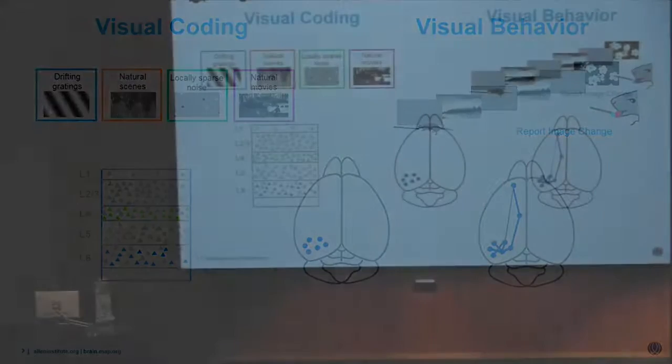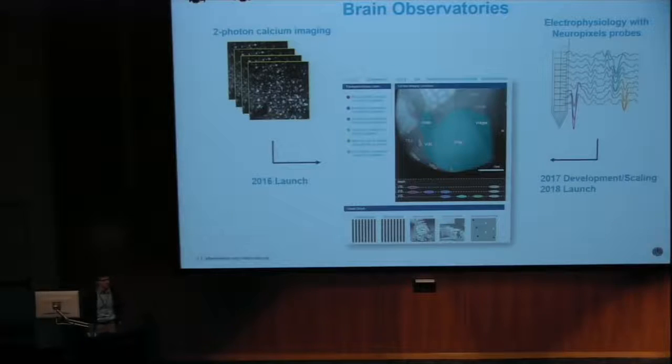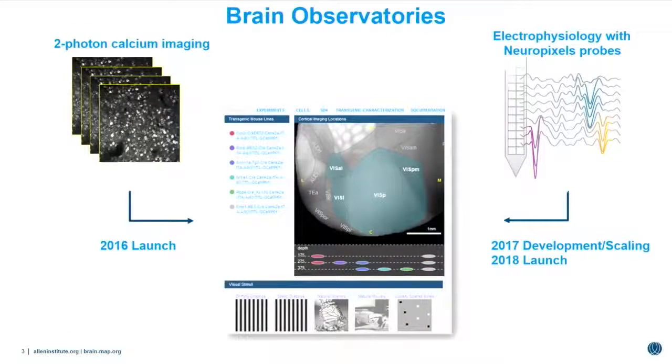To address these questions, we're building brain observatories that allow us to map activity in the mouse brain in a systematic way using standardized and comprehensive methodology. In the last team talk you'll hear about today at the end of the day, you'll learn about the two-photon imaging brain observatory, which launched this year in 2016. This data has been released online prior to publication.